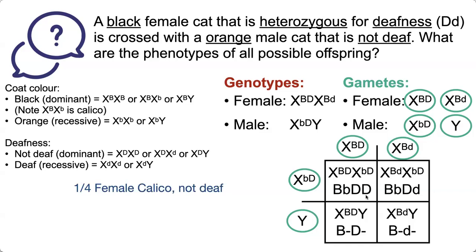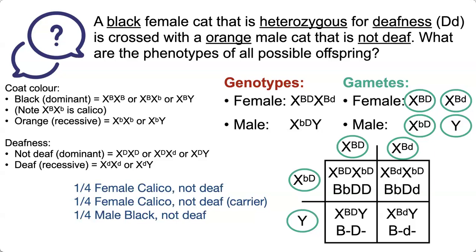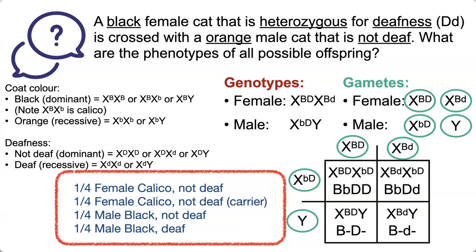Taking the first box, a quarter of these offspring are female, calico, and not deaf. Looking at the second box, a quarter are also female and calico, also not deaf, but those will be carriers for the allele for deafness. Looking at the third box, those will be male, black, and not deaf. There's a quarter chance of each one happening, and that is your final answer to this question.